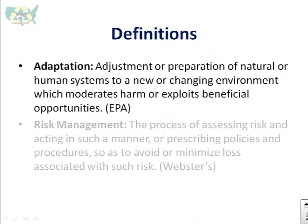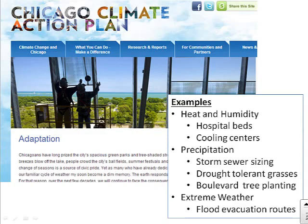A couple of definitions: the title of the presentation uses both adaptation and risk management. Adaptation is often used in city planning — adapting to climate change and writing plans. An example is the Chicago Climate Action Plan, where they are looking at increases in heat and humidity and thinking about how their city will respond.